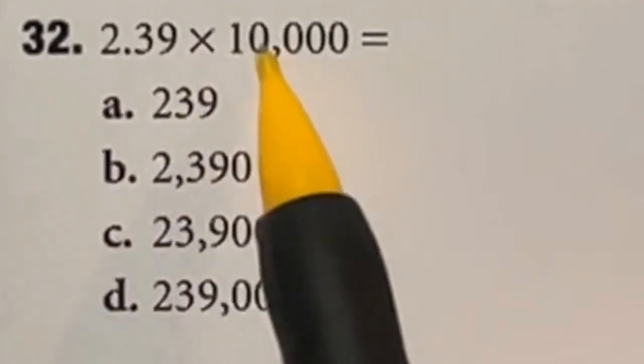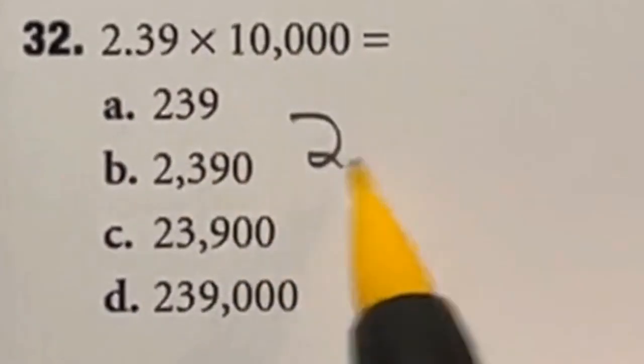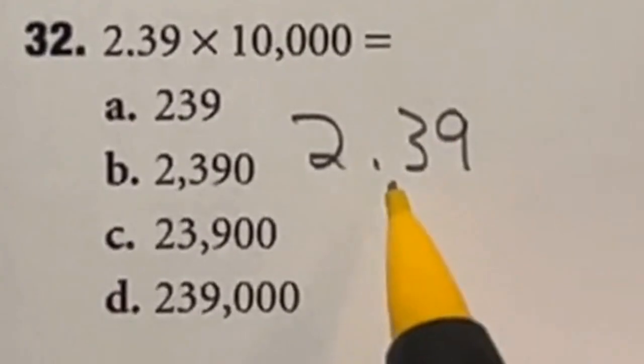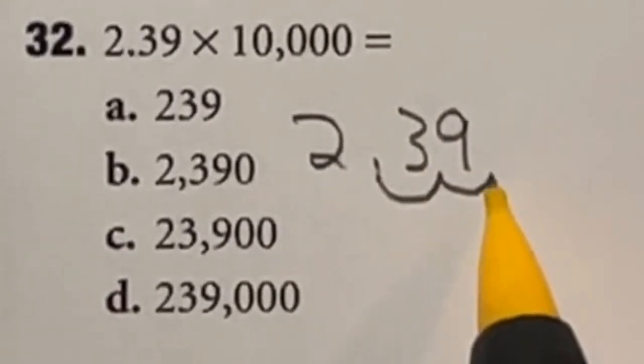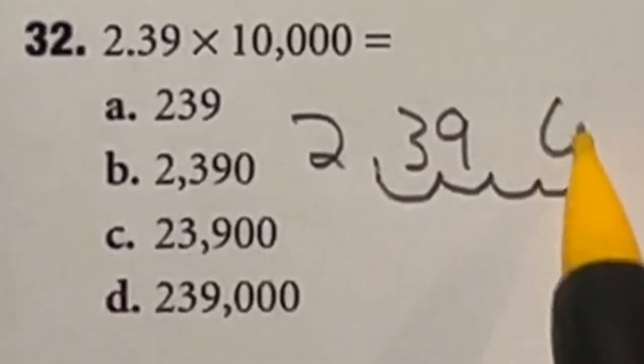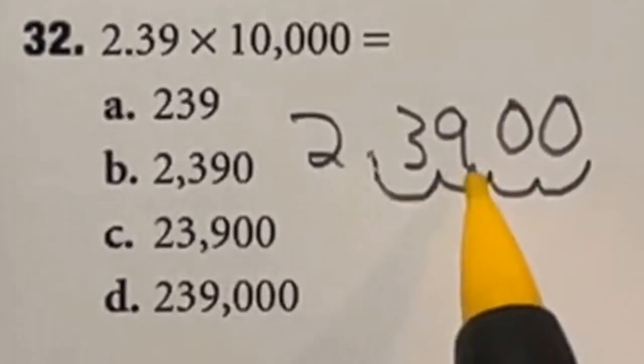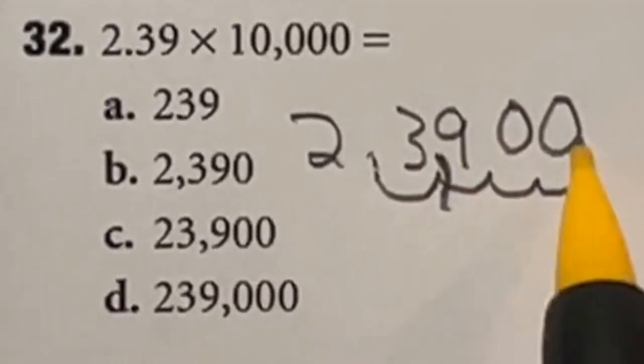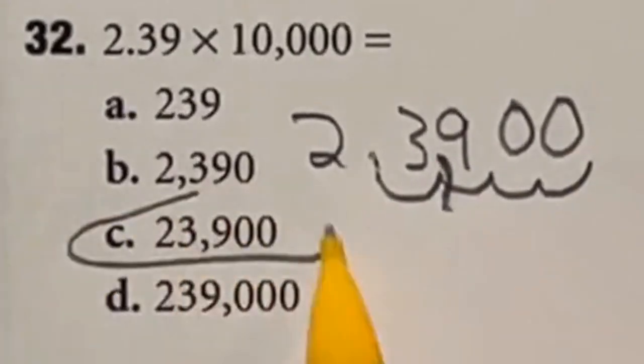So in this case, there's 1, 2, 3, 4 zeros. So if I have 2.39, I'm going to move that over 1, 2, 3, 4, and fill in 0s for the ones I don't have, giving me a final answer of 23,900, which is answer C.